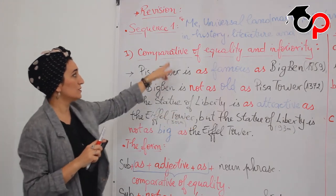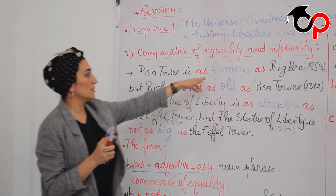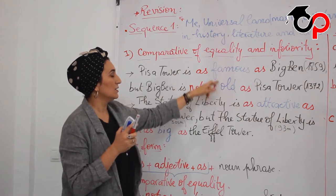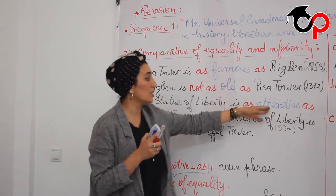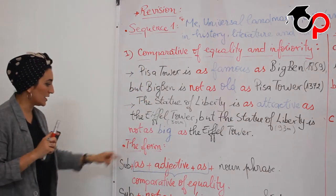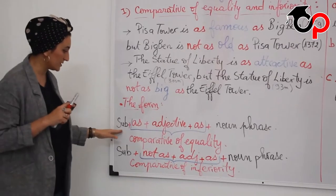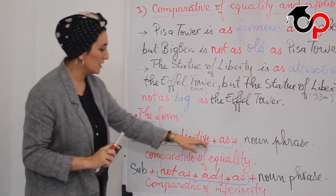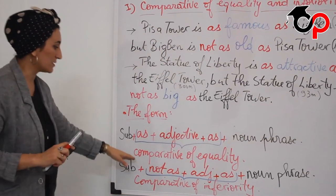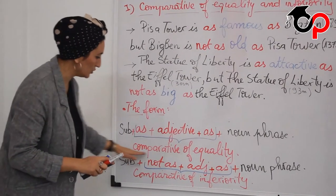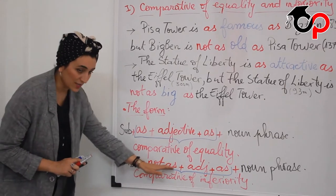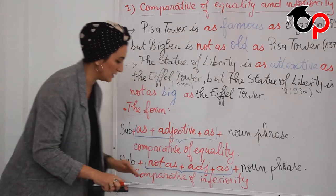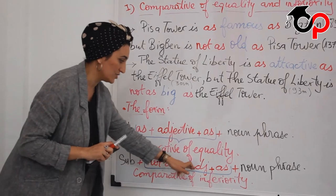As you can see, we use the comparative of equality and inferiority. For equality: 'as adjective as.' For inferiority: 'not as adjective as.' This works for both short and long adjectives. The sentence structure is: subject + as + adjective + as + noun phrase for equality. And: subject + not as + adjective + as + rest of sentence for inferiority — meaning something is inferior to something else.